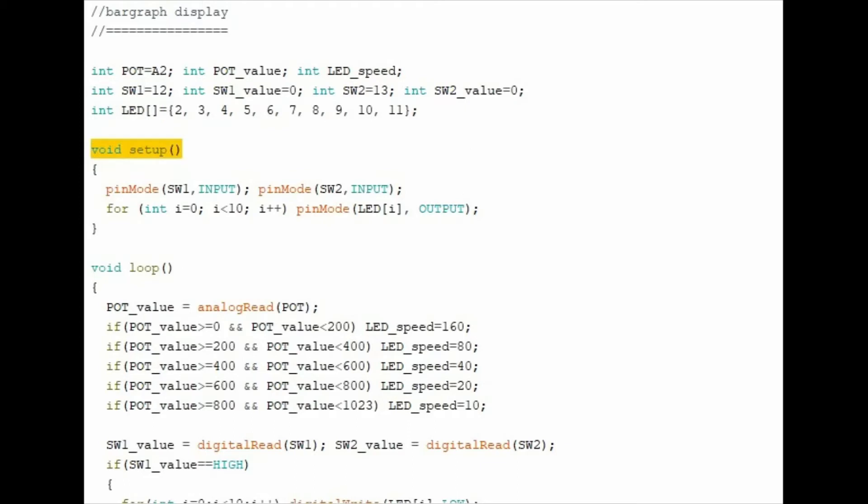In the setup function, we assign the pin modes of the digital pins. Here for the two switches, we assign the pin mode as input. And here for the 10 LEDs of the bar graph, using a for loop, we assign the pin mode as output.